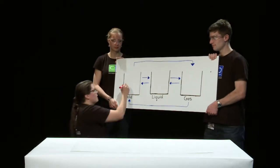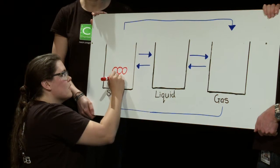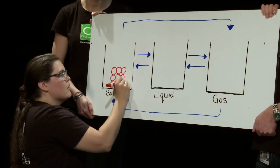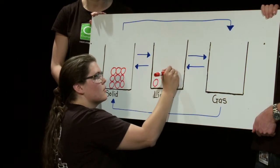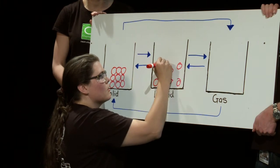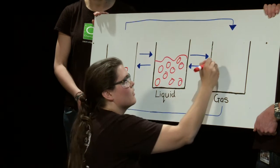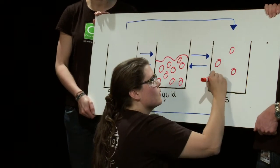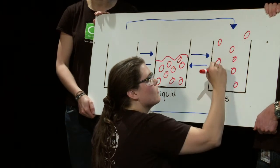There are three states of matter: solid, liquid, and gas. The only difference between these states is how the particles within them are arranged. In a solid the particles are tightly packed together to form a rigid structure. In a liquid the particles aren't held as tightly together and are able to move over each other. In a gas the particles are able to move freely to occupy the entirety of whatever container they inhabit.